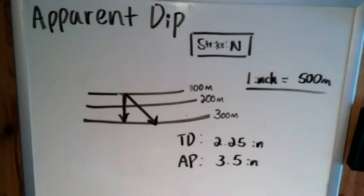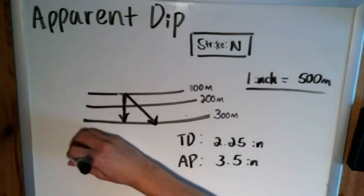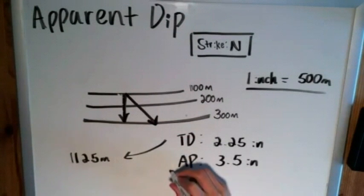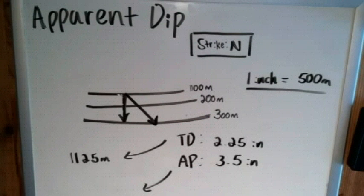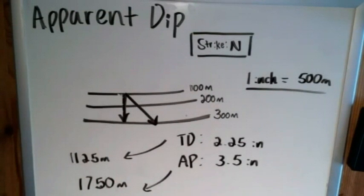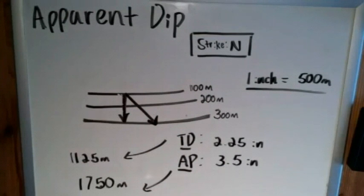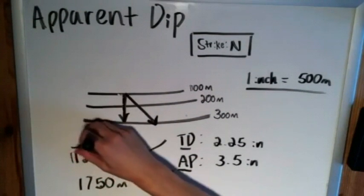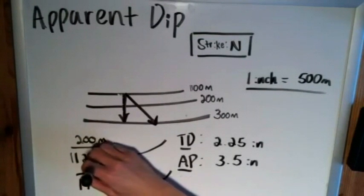Okay so we know that the true dip travels 2.25 inches which is let's see 500 times 2.25, a quarter of a quarter of 500 is 125, so 1125 meters horizontally. And the apparent dip is 3.5 inches which is one thousand seven hundred fifty meters horizontally. And now what we can do with this is think about these, the true dip and the apparent dip as gradients, right? Since we have these contour lines that give us elevation we know that these have changed by 200 meters. Both of them go up to the 300 meter contour line so we can say that that's 200 meters divided by our two numbers.